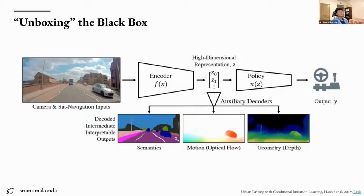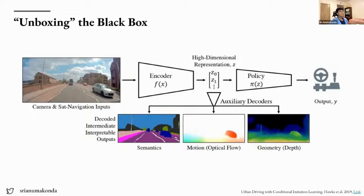Optical flow, also known as motion flow, takes two consecutive images and measures the change in pixel values. This helps us detect movement and understand dynamic agents like cars and pedestrians. If you're driving on a highway, the trees on the sides don't move much compared to cars, so you can measure the delta between two images to better understand what's happening. Depth estimation lets us understand how far objects are away, and using that information we can create 3D maps of our environment and plan trajectories.